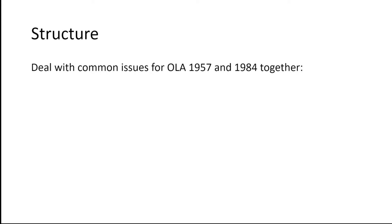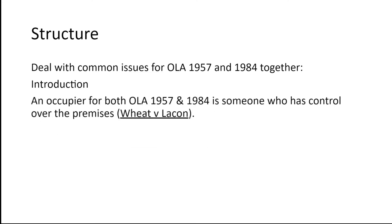When structuring an answer that has both Acts, you can deal with the four common issues at the start together because they are the same for both Acts. Include an introduction saying that Lek might have a claim under the 1957 Act and Carl under the 1984 Act, then explain you're going to do the first four elements together. For both Acts, an occupier is someone who has control over the premises — it's not about whether they own it, it's about whether they control it.